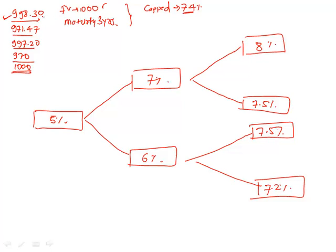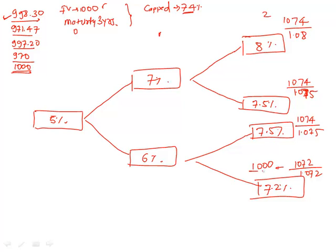All right, see this now. One year forward rate 2 years from now is 8%. At this node, had there been no cap, the cash flow would have been 1080—1000 being the face value, 80 being the coupon. But because of the cap, now the cash flow would be 1074. However, discounting will happen at 1.08. In the same fashion there, since there is a cap, 1074 is the cash flow divided by 1.075. Same here, 1074 divided by 1.075. And this would be 1072 divided by 1.072. So this value is 1000.